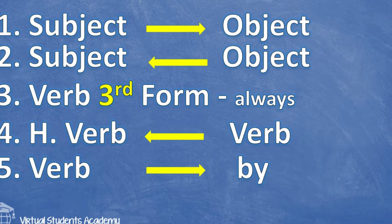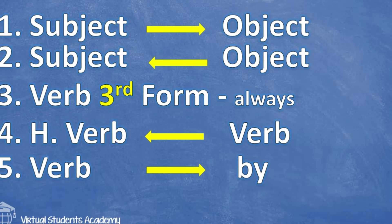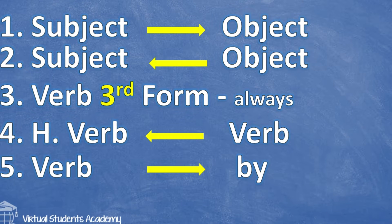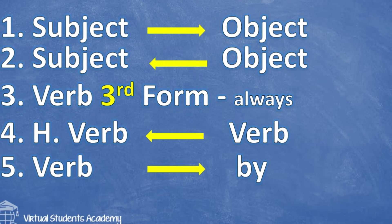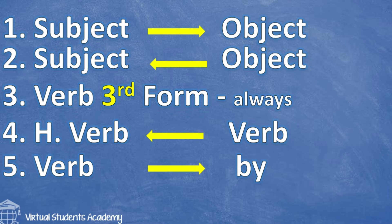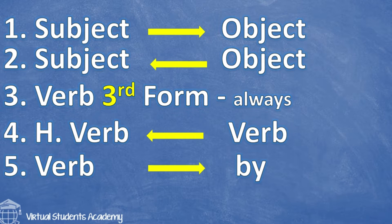Rule number one: the subject will turn into the object, meaning the subject will jump to the place of the object. Rule number two: the object will jump to the place of the subject. So they are changing their places.